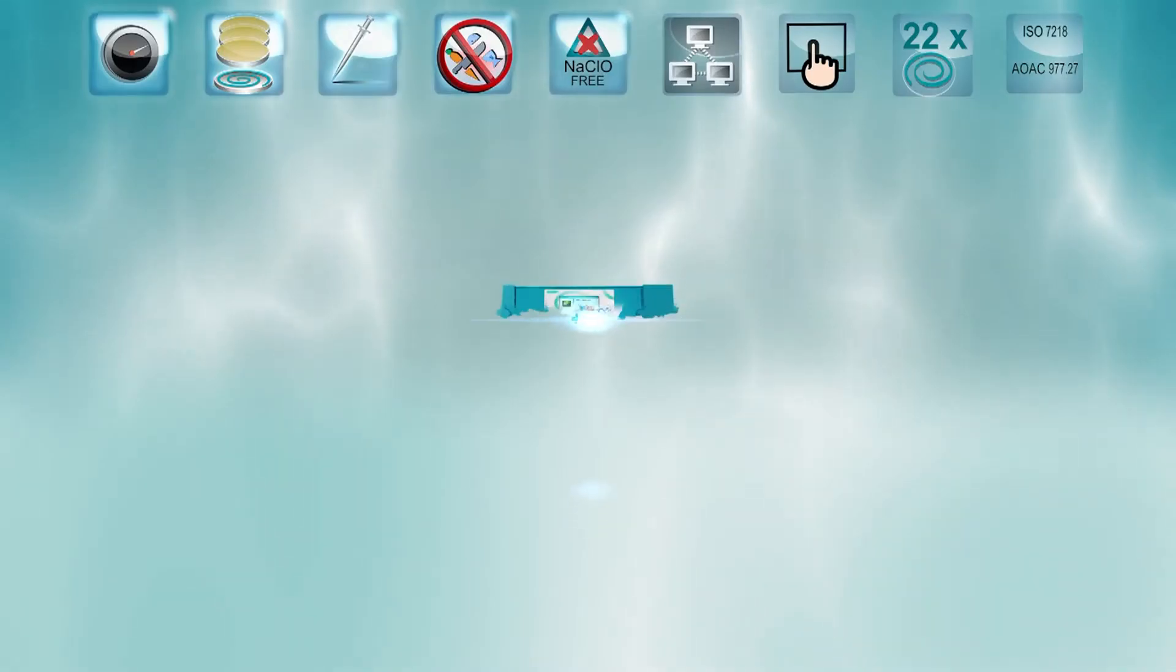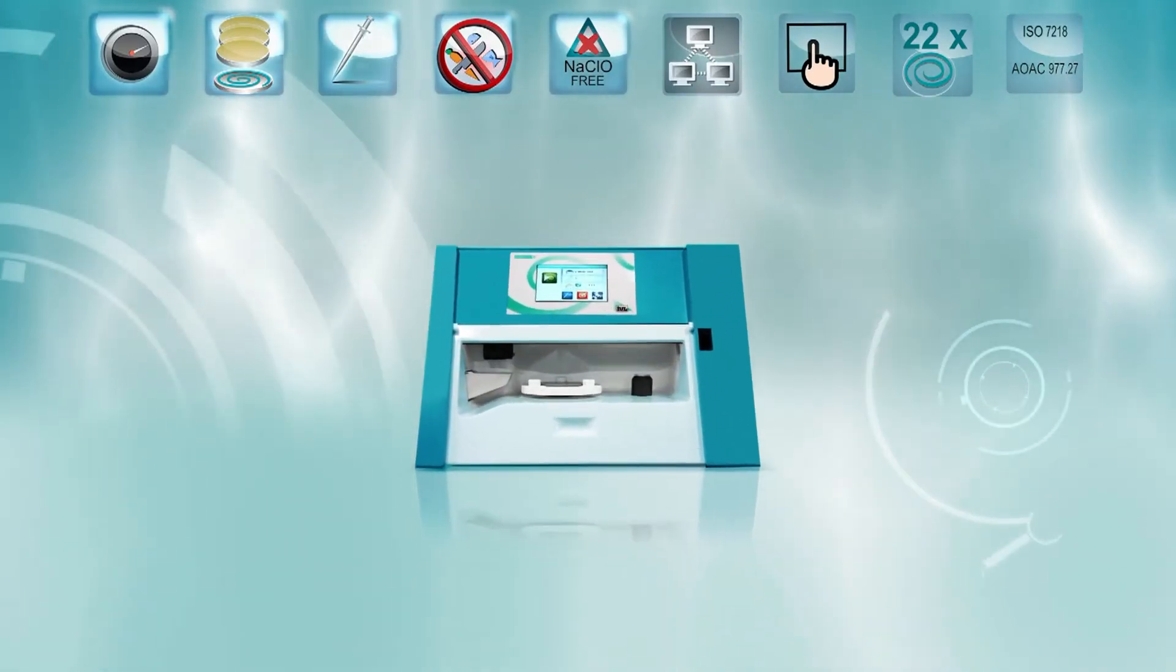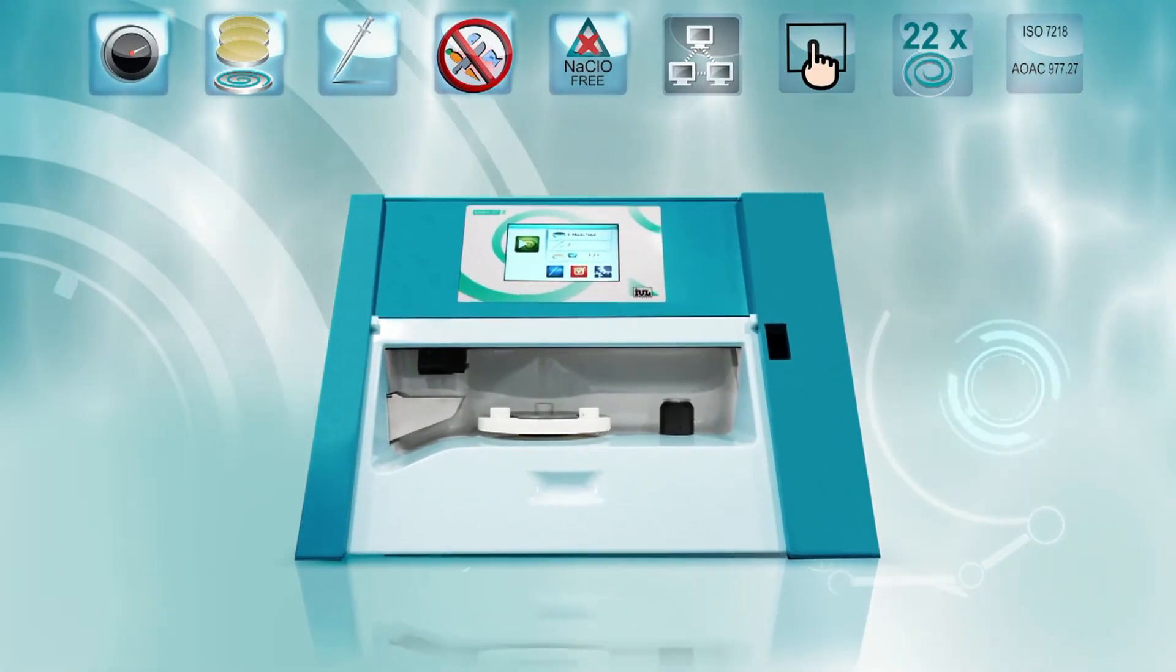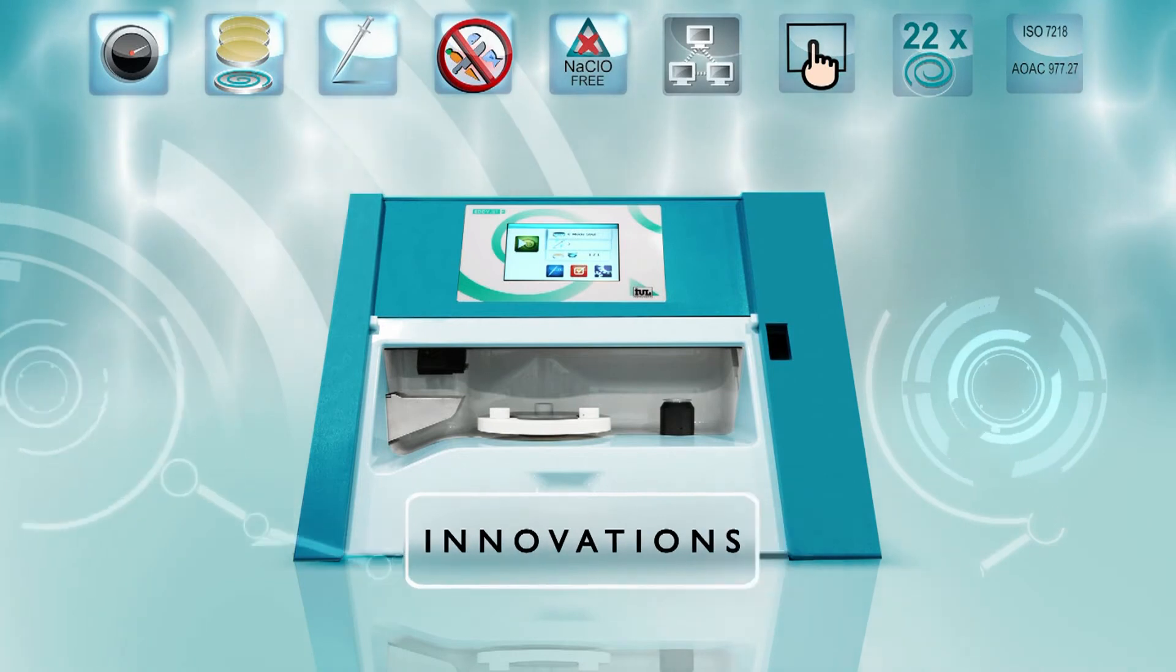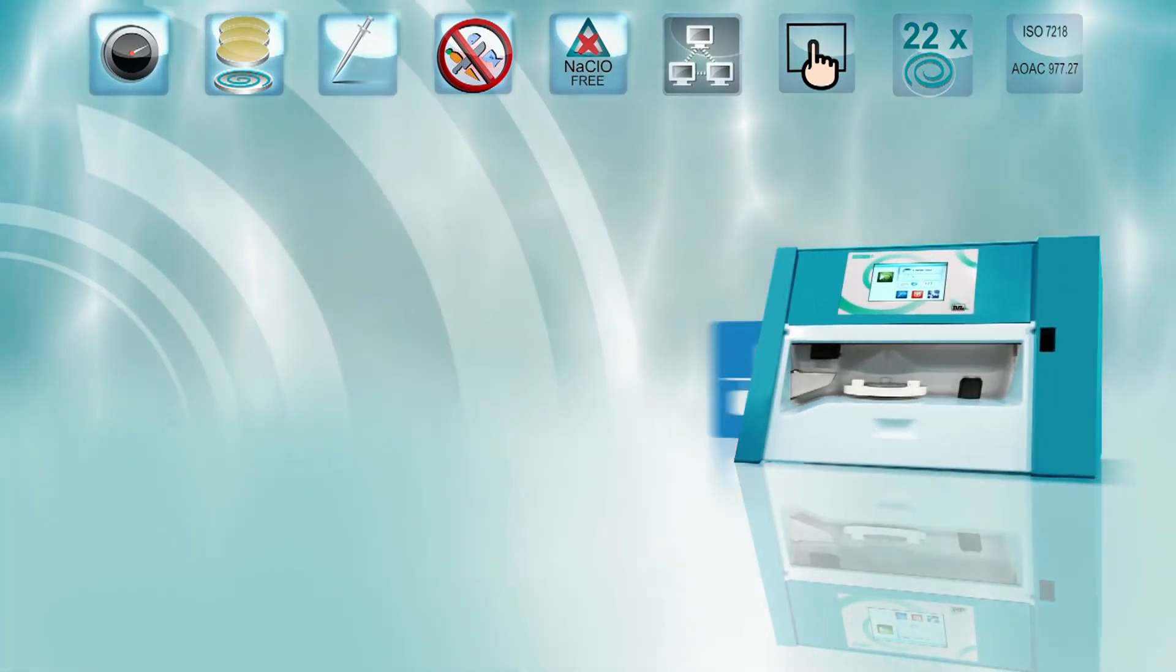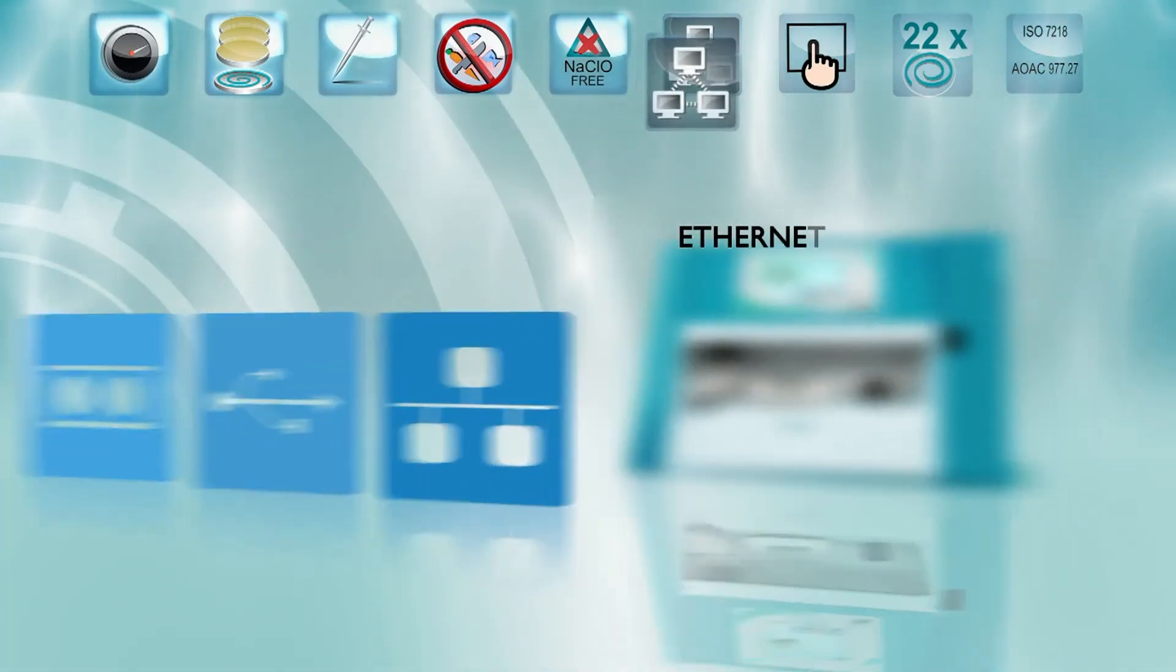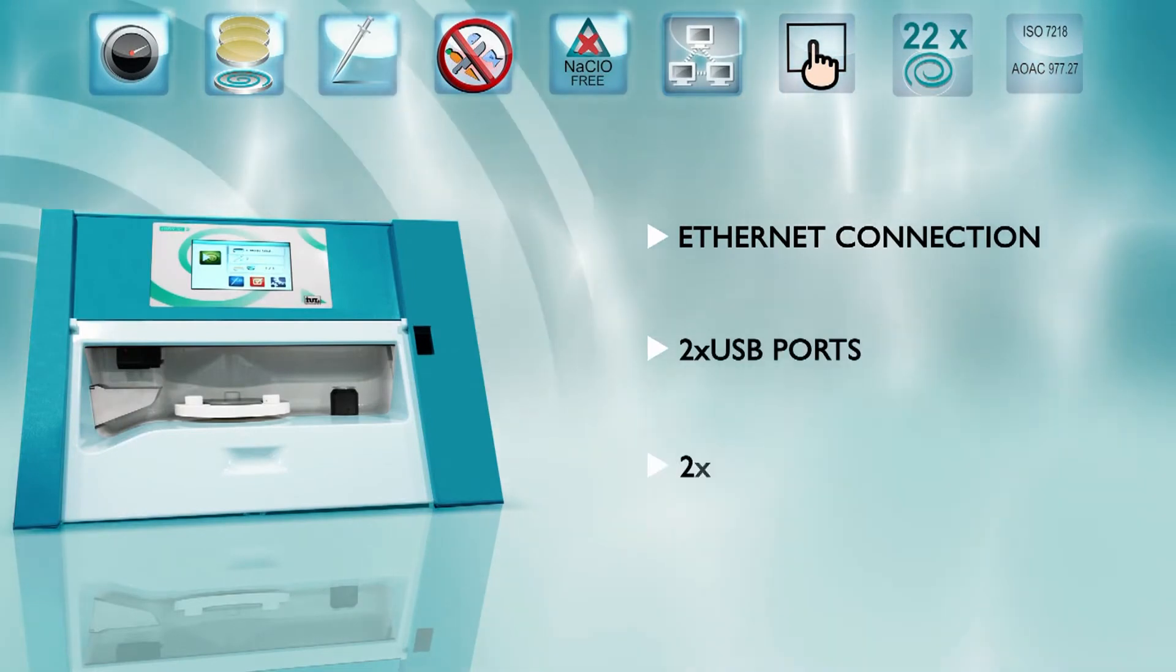EDIJED2 is an unmatched spiral plater that pushes the outstanding standards of the first EDIJED even further by adding trendsetting innovations to spiral plating. Its cutting-edge connectivity features an Ethernet connection, two USB ports, and two RS-232 ports.